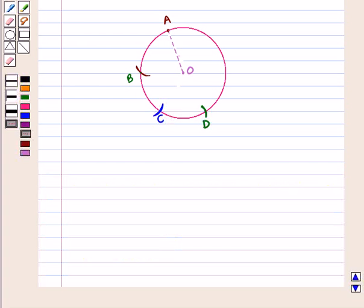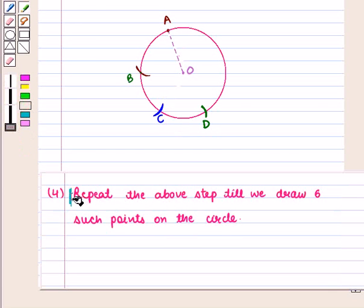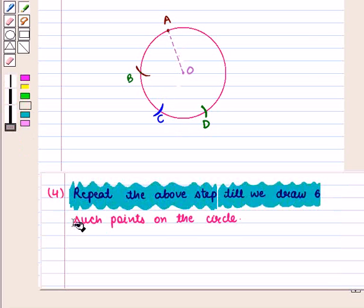Now, with center C and same radius equal to OA, we draw another arc which intersects the circle at point D. And now, we'll repeat the above step till we draw six such points on the circle.